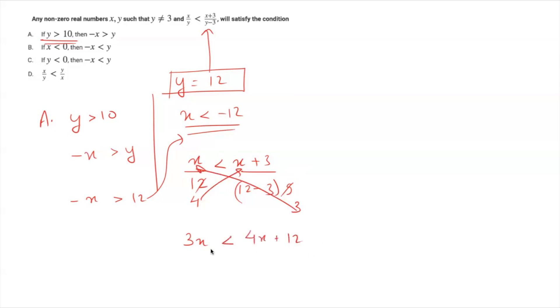3x is less than 4x plus 12 and that's why we are getting 3x minus 4x minus x is less than 12. But if I multiply this inequality both sides by minus 1, I will get x is greater than minus 12.